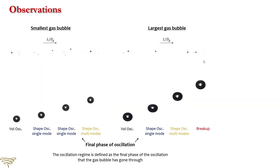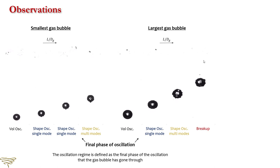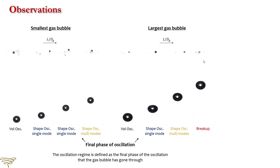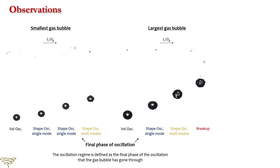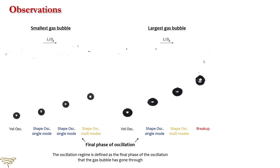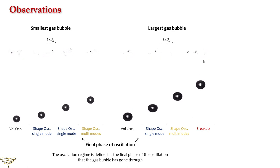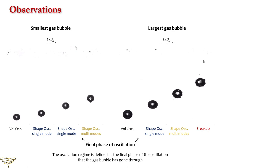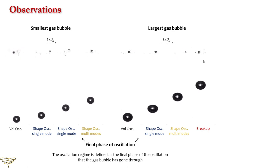Once the cavitation bubble is generated, the air bubble starts oscillating in volume oscillation regime. Volume oscillation means the radial expansion and contractions of the bubble without varying its shape. As soon as the incident acoustic wave is sufficiently intense, the oscillating surface of the air bubble becomes unstable due to the forcing of large amplitude volume oscillations, which leads to the onset of shape oscillation. We observe four different oscillation regimes: volume oscillation, single-mode-shape oscillation, multi-mode-shape oscillation, and break-up.